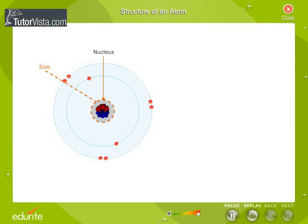The size of the nucleus is extremely small compared to the size of the atom. Observe that the nucleus consists of two types of particles known as protons and neutrons.